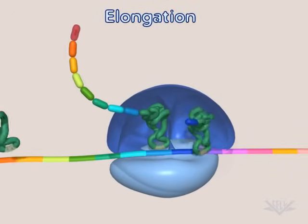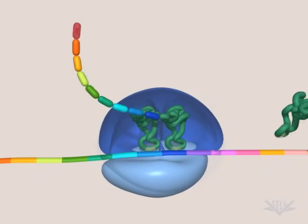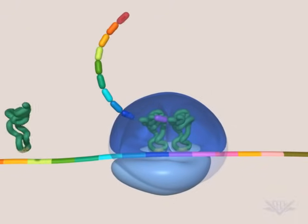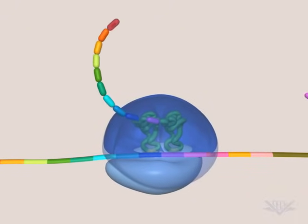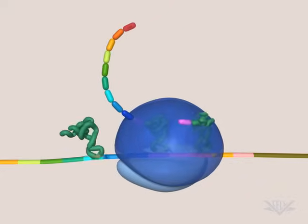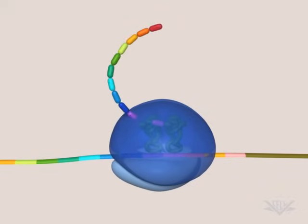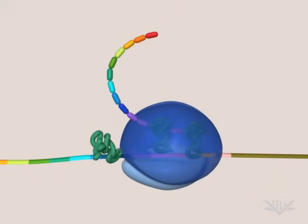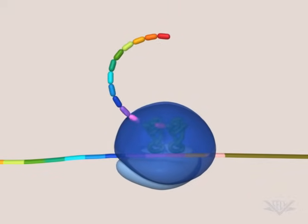As elongation continues, the growing peptide is continually transferred to the A-site tRNA, the ribosome moves along the mRNA, and new tRNAs enter.